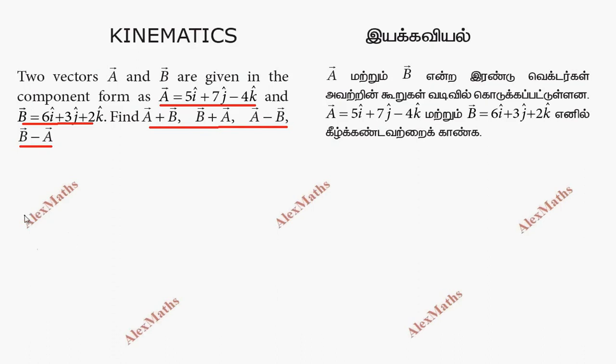So if we first look at A vector plus B vector, we look at the components. Corresponding i and i components add together - 5i and 6i add to give 11i cap. Then the j components: 7 and 3 give 10j cap. The k components: minus 4 plus 2 gives minus 2k cap.